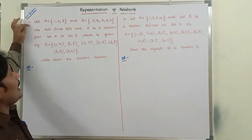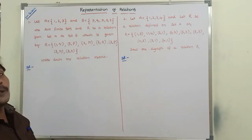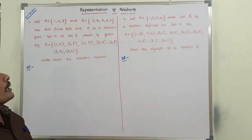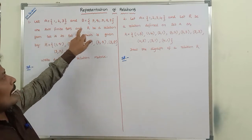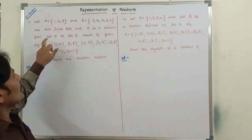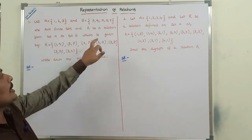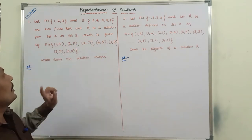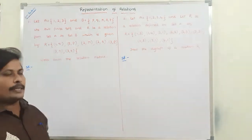The first problem is: let A be equal to the set {1, 2, 3} and B be equal to the set {P, Q, R, S, T}. These are two finite sets and R is a relation from set A to set B which is given. Write down the relation matrix.